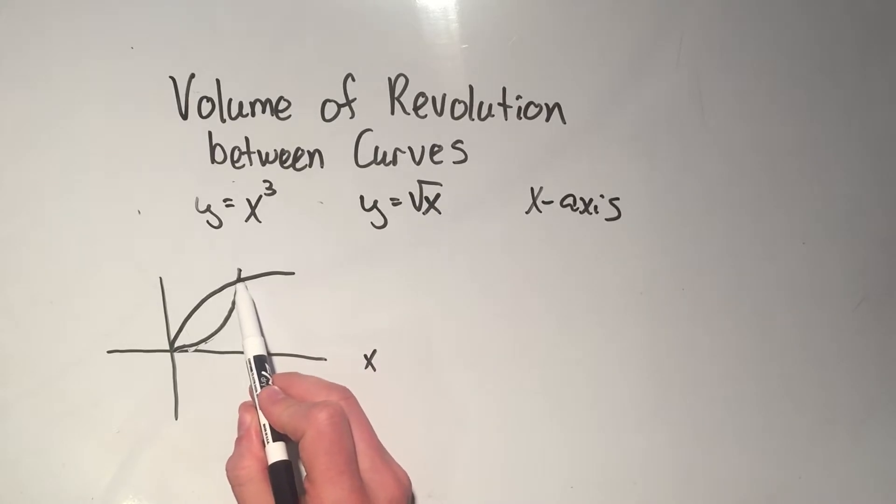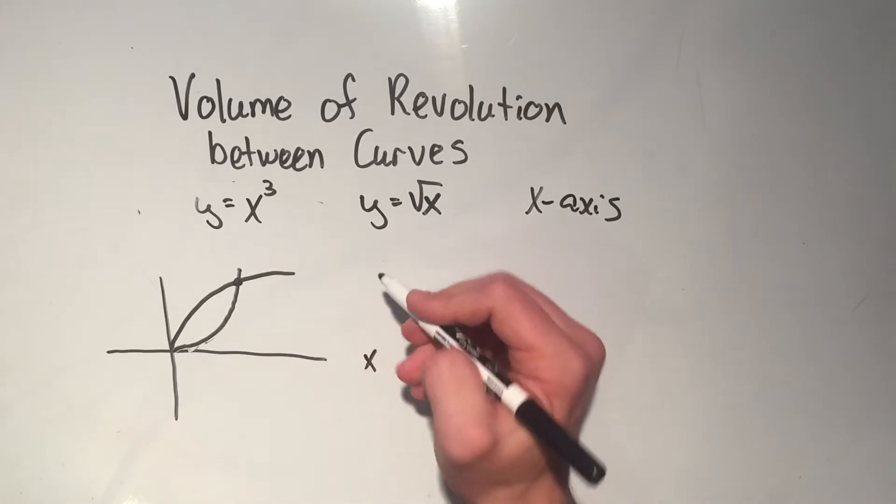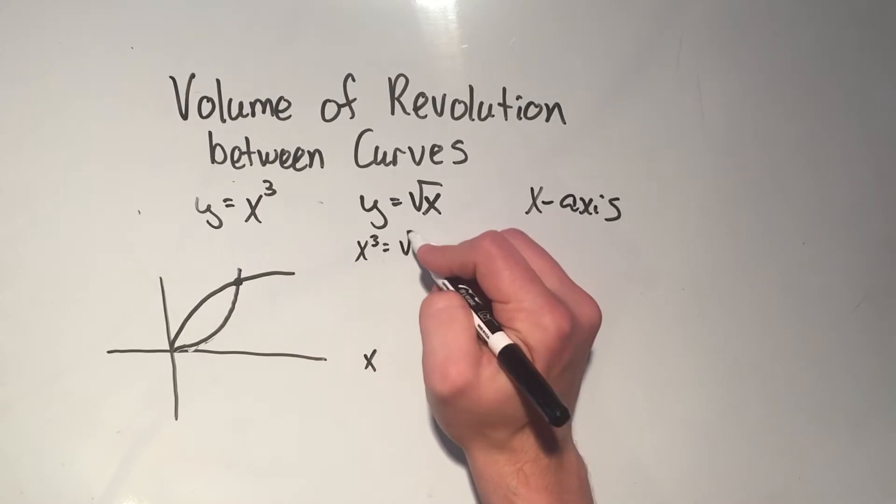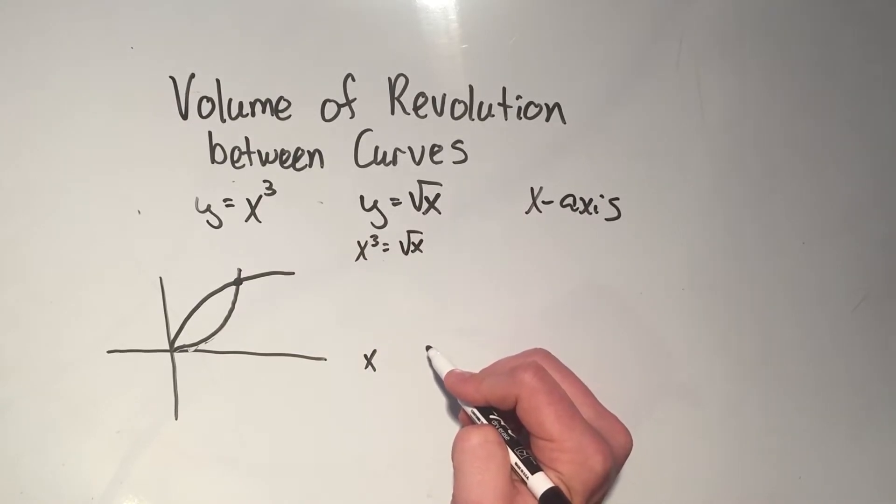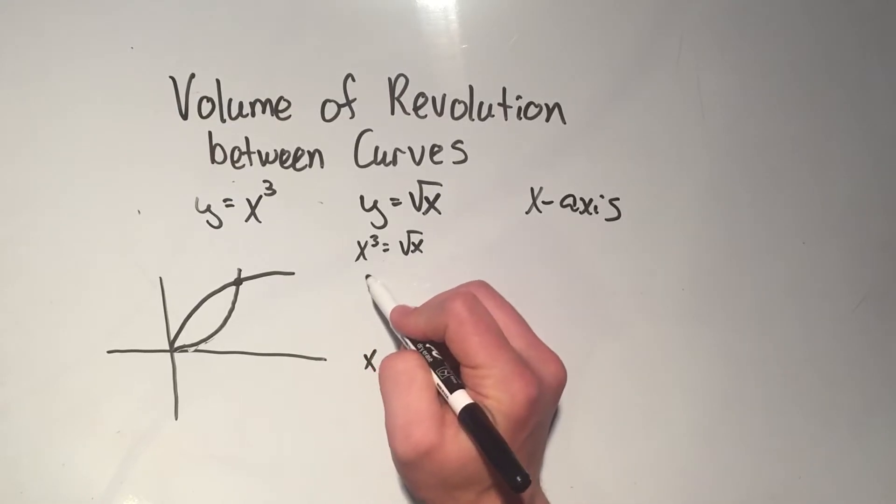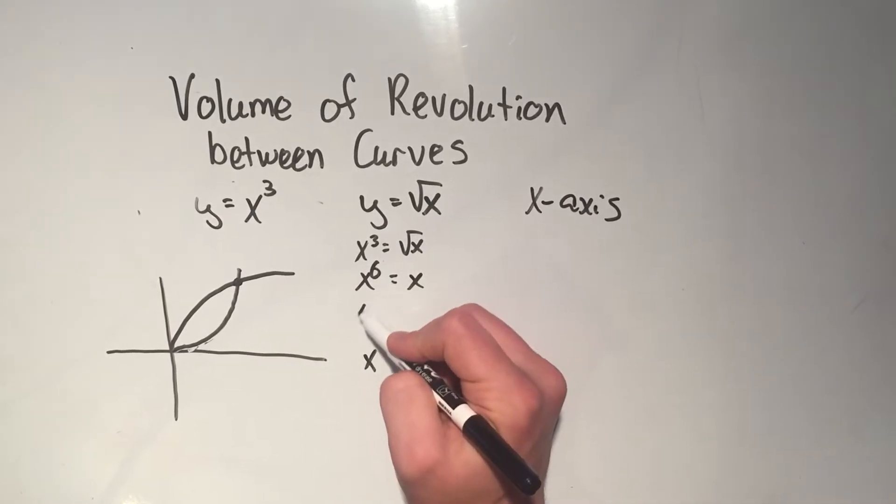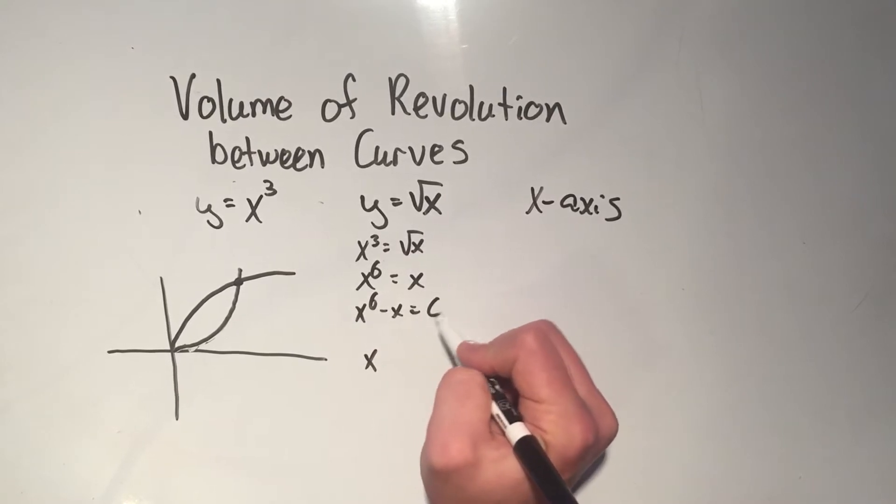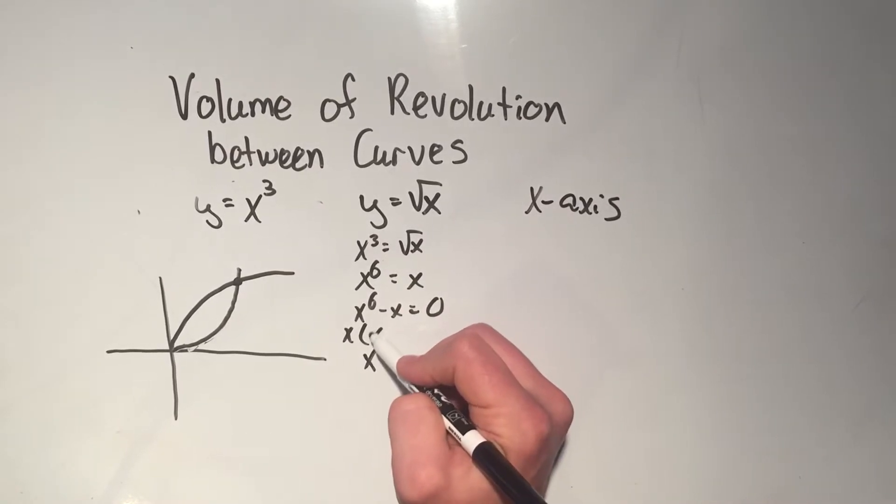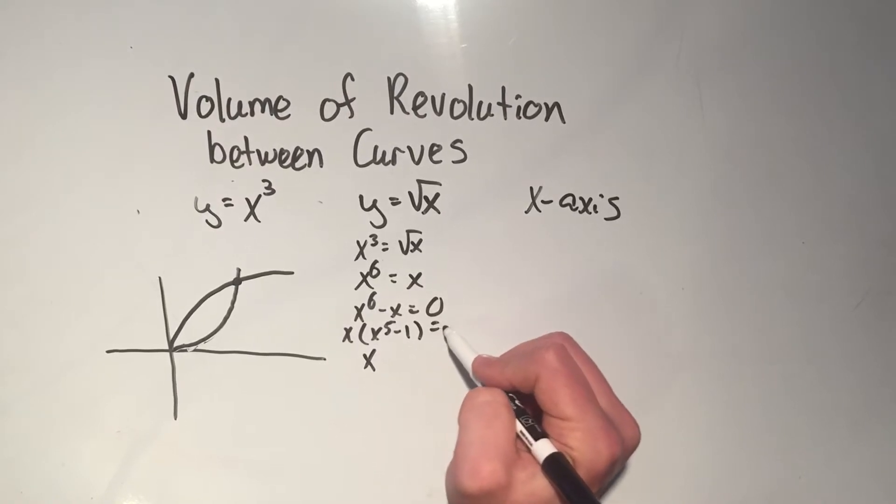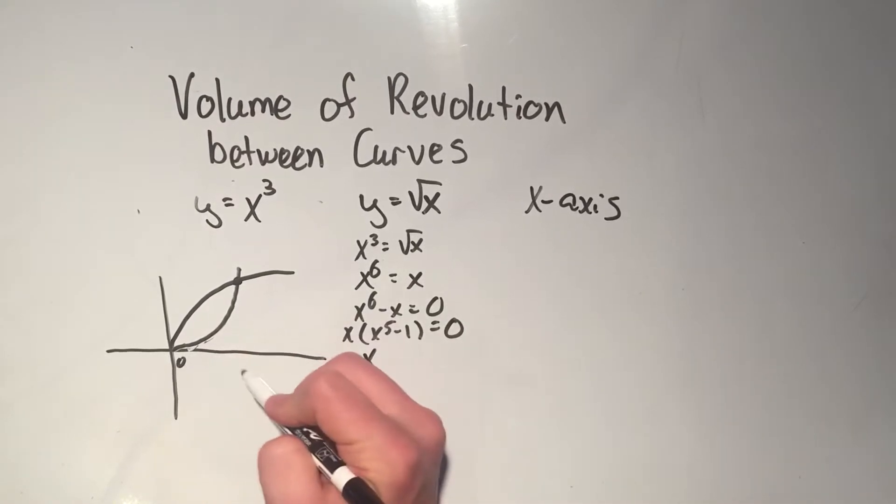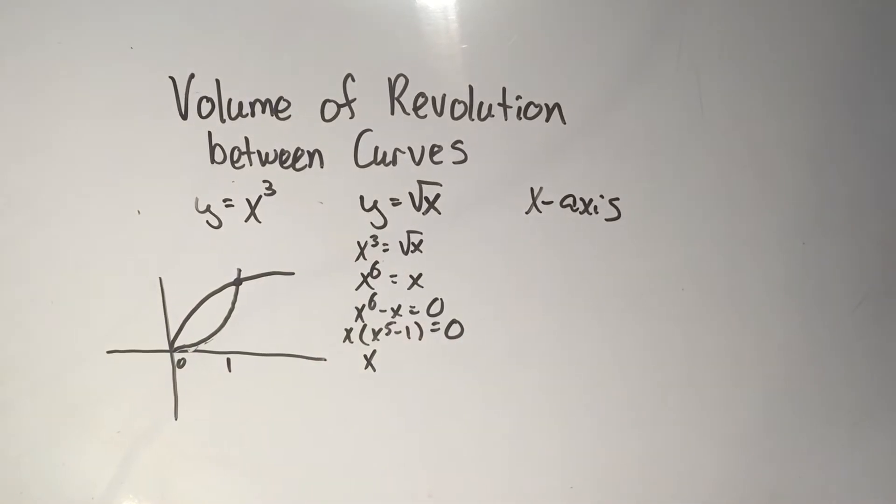So you'll see that they intersect here. And I can find this point of intersection by setting these two things equal. So x cubed equals square root of x. And if I want to undo that square root, I'll square both sides. So if I square something that's cubed, that's to the sixth, that'll be x. Subtract x from both sides, and then I can factor out an x. And pretty easy to see that my answers are going to be zero and one.